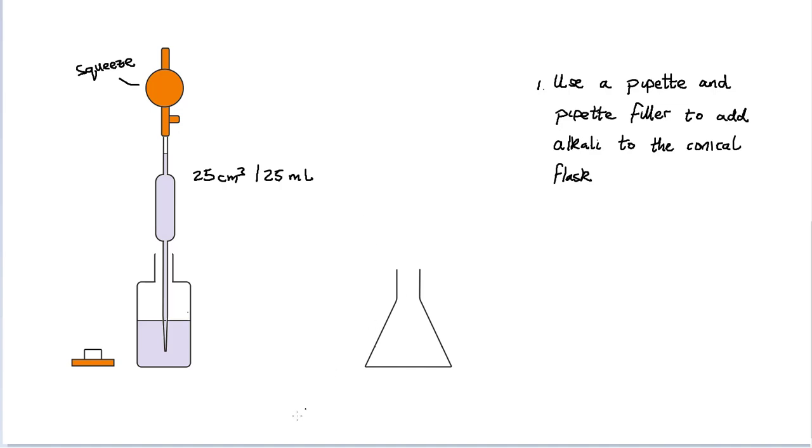We're now going to transfer that to the conical flask. By squeezing on the valve here I allow air into the system and the alkali then passes through the pipette into the conical flask. We've added the alkali to the conical flask. What we're going to do now is move this over to the burette, but before we do that we're going to add some indicator to the alkali.